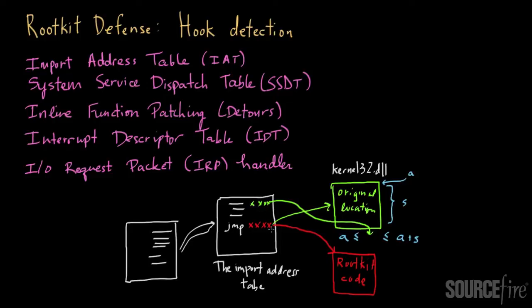If you see an address that falls outside this range — either smaller than A or bigger than A plus S — then you know you're dealing with a function that's not legitimate. It's clearly outside the acceptable range of addresses, and as such it's most likely a rootkit or something that's not quite right.